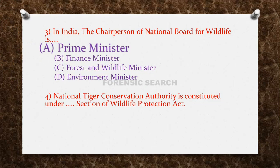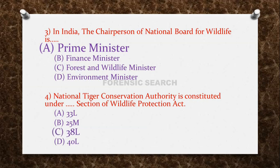Question 4: The National Tiger Conservation Authority is constituted under which section of the Wildlife Protection Act? Option A: 33L, Option B: 25M, Option C: 38L, Option D: 40L. The correct answer is Option C — Section 38L. The National Tiger Conservation Authority is constituted under Section 38L.